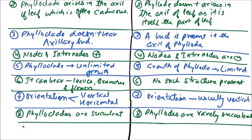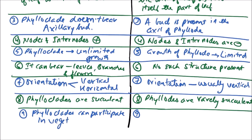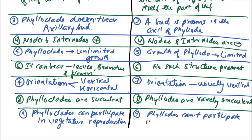Another difference is that phylloclades can participate in vegetative reproduction, while phyllodes cannot participate in vegetative reproduction.